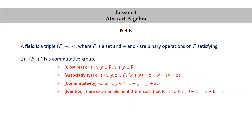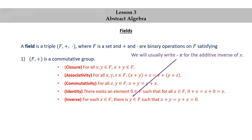Identity: there exists an element 0 in F such that for all x in F, 0 + x = x + 0 = x. And inverse: for each x in F, there is y in F such that x + y = y + x = 0. We will usually write −x for the additive inverse of x, so x + (−x) = (−x) + x = 0.